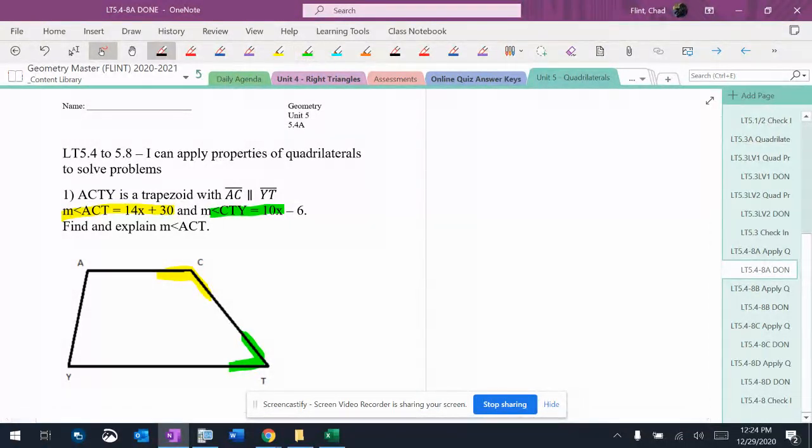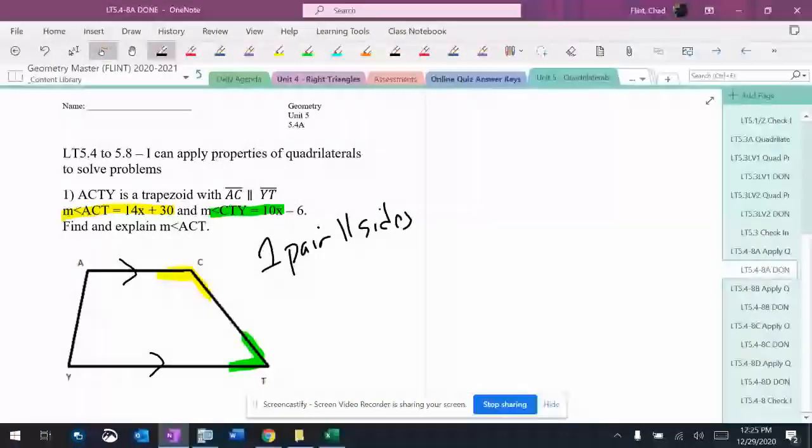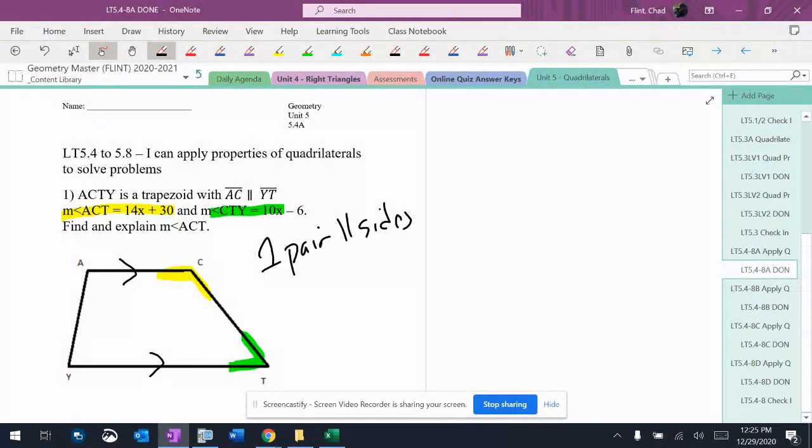It's a trapezoid, so the only thing that's really true about a trapezoid is it has parallel sides. We've got one pair of parallel sides. With that pair of parallel sides, we can get alternate interior angles that are congruent or consecutive interior angles that are supplementary.